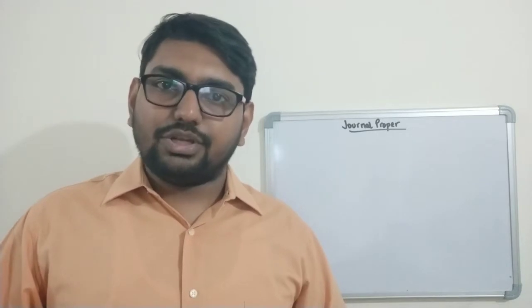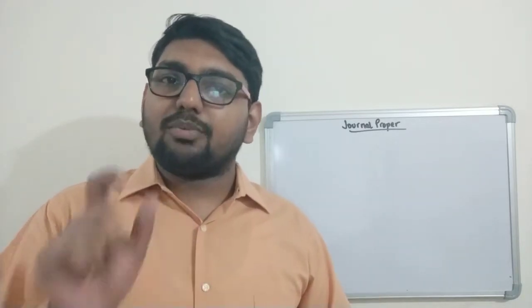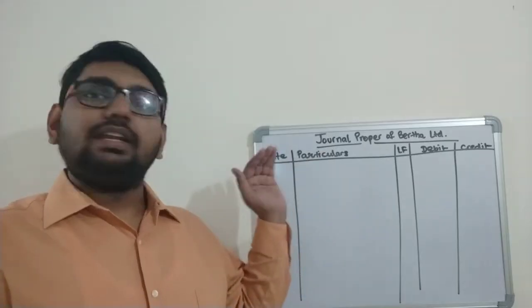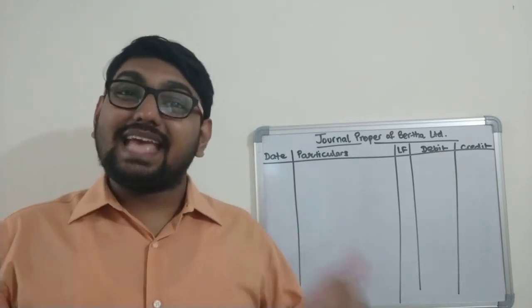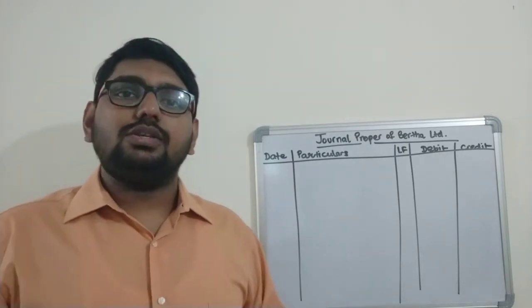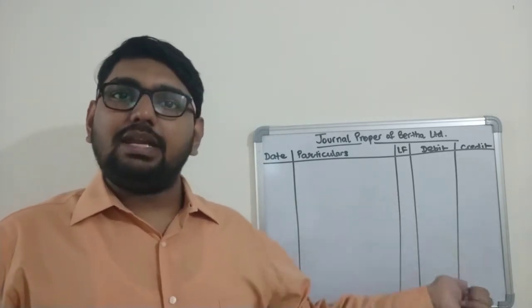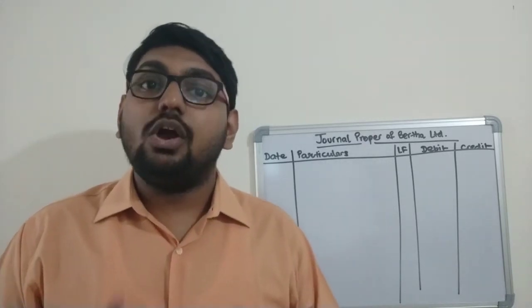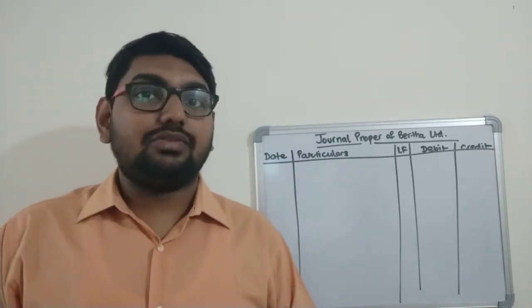We are going to do this illustration today. The question says: make a journal proper in the books of Bertha Limited. In the heading I will write 'Journal Proper of Bertha Limited' and draw the format. The format is exactly the same as for a journal — we have a date column, particulars column, LF, debit, and credit. The entire logic of passing journal entries also remains the same.